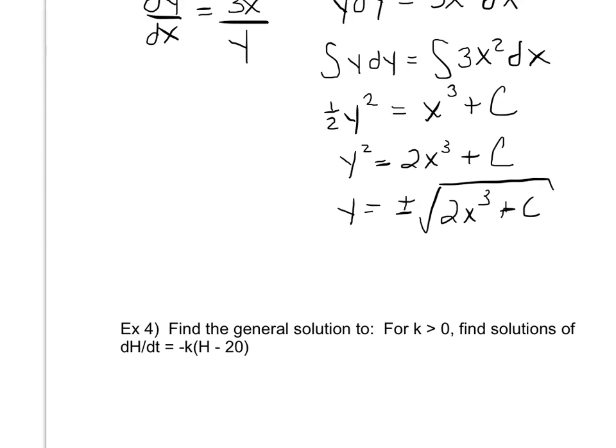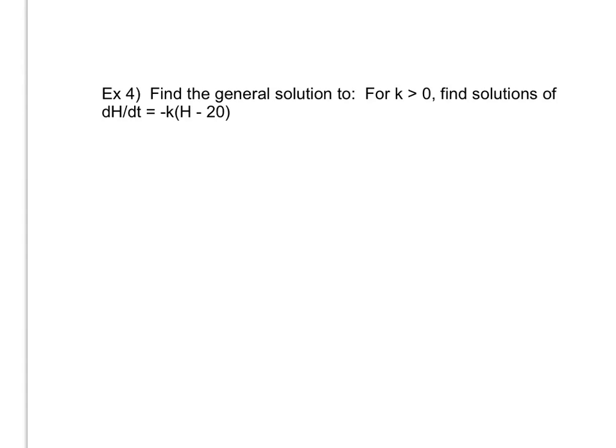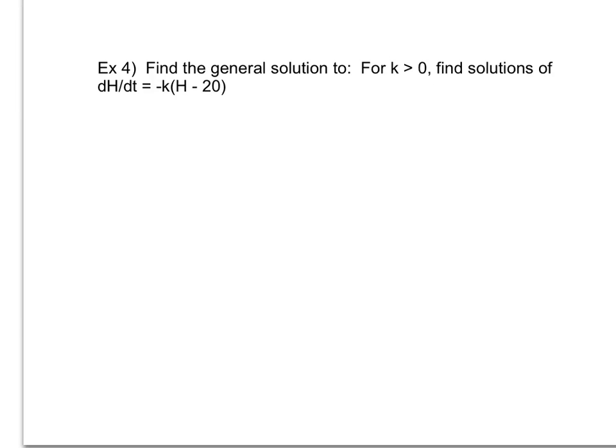Looking at another example, a bit more difficult. What if I'm asked to find the general solution to dh/dt equals negative k times (h minus 20)? I see two different variables, h and t, but on the right side I only have h and some k. Remembering back to previous math courses, direct variation was in the form y equals kx, where k stood for our constant of variation — basically a fancy word for slope, meaning h and the rate are in proportion.